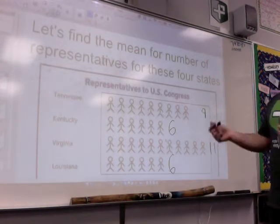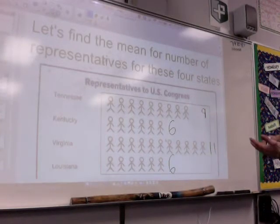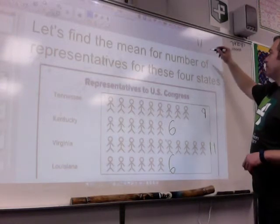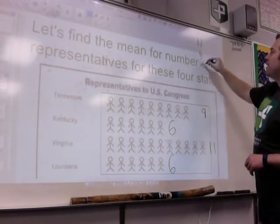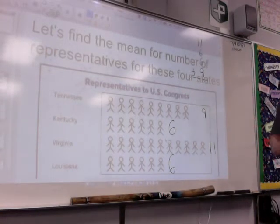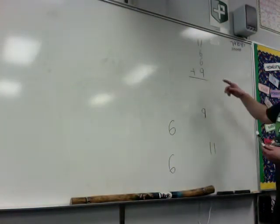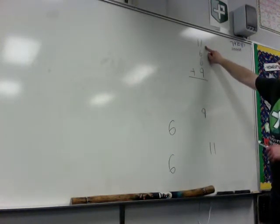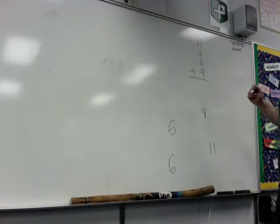Now let's find the mean or the average representatives out of these four states. So I'm going to take my four numbers, my 11, my 6 plus 6 equals 12, but I'll just keep them as 6s, and my 9. Once I add those up, let's turn the screen off for a little bit so we can see those numbers a little better. I add these up and I have 6 plus 6 equals 12 plus 11 equals 23 plus 9 more equals 32.